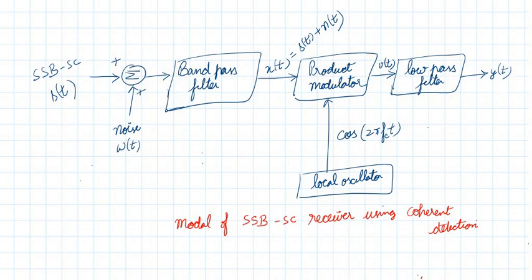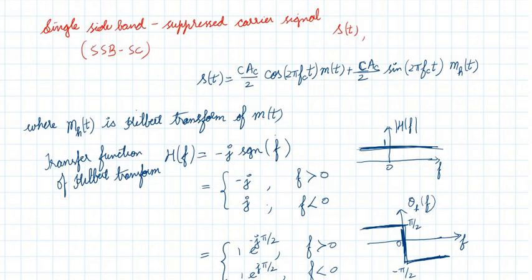v of t passes through a low pass filter to get y of t. We are going to study about the effect of noise — that is, the signal to noise ratio at the input and signal to noise ratio at the output. SNR at the input is called SNR_c (channel), and SNR at the output is SNR_o.